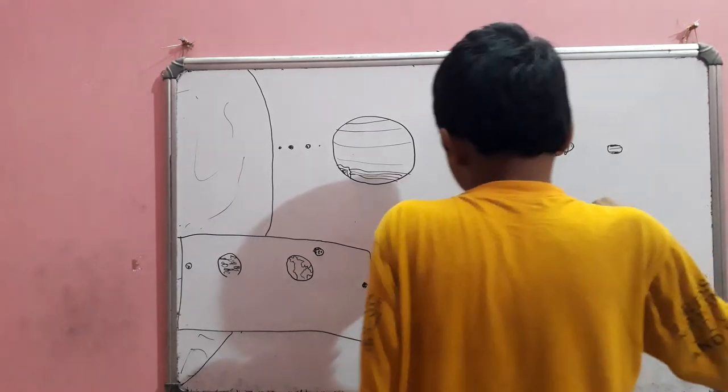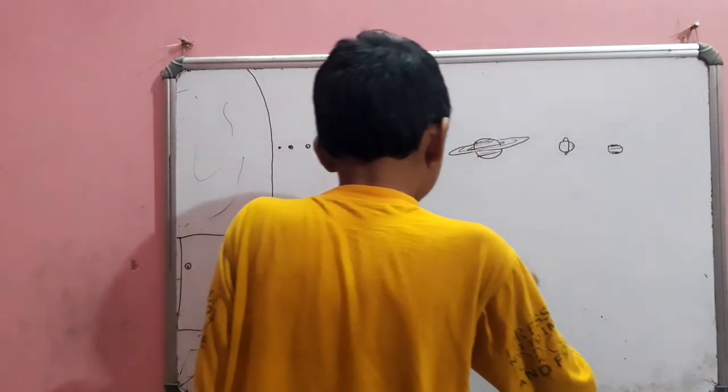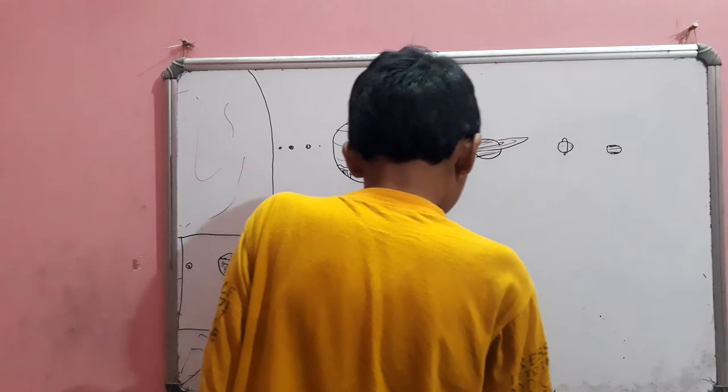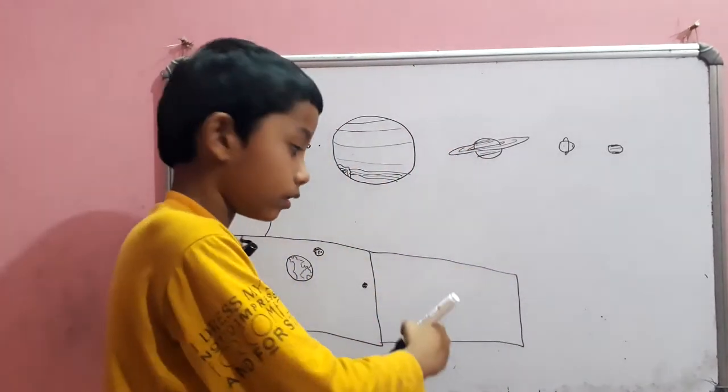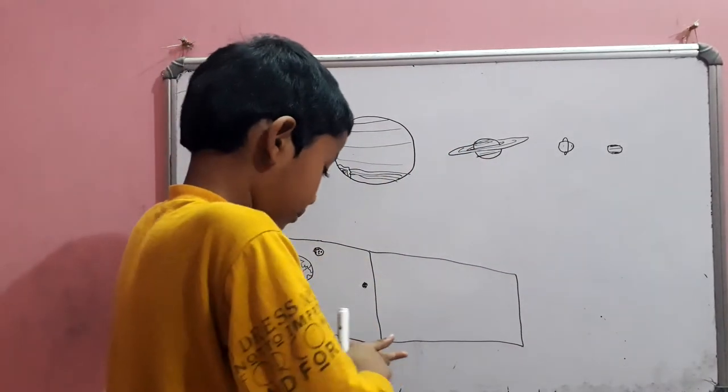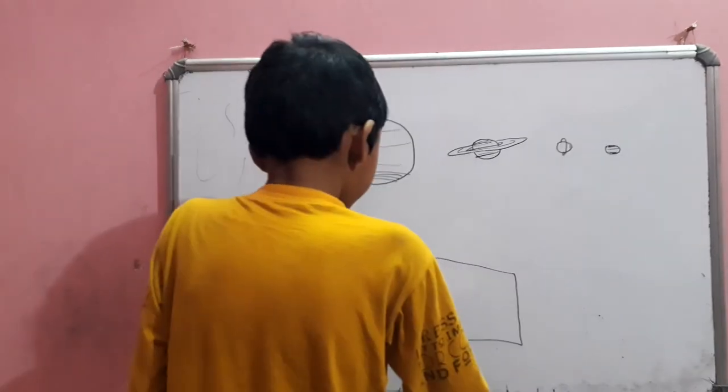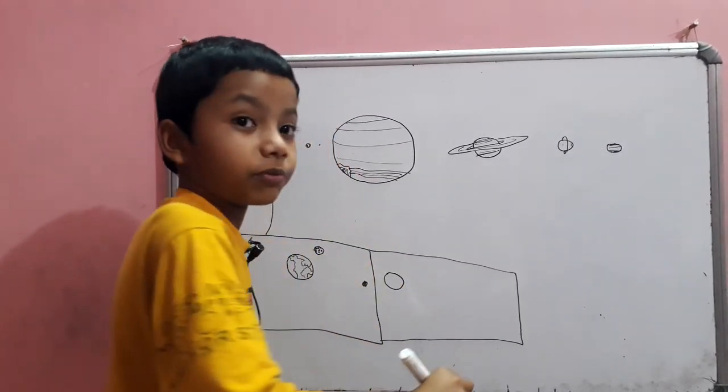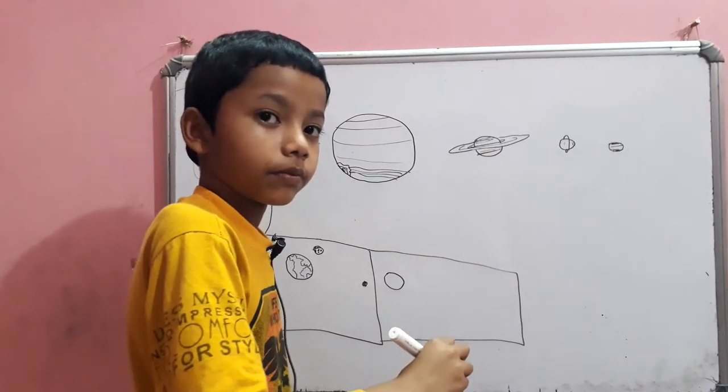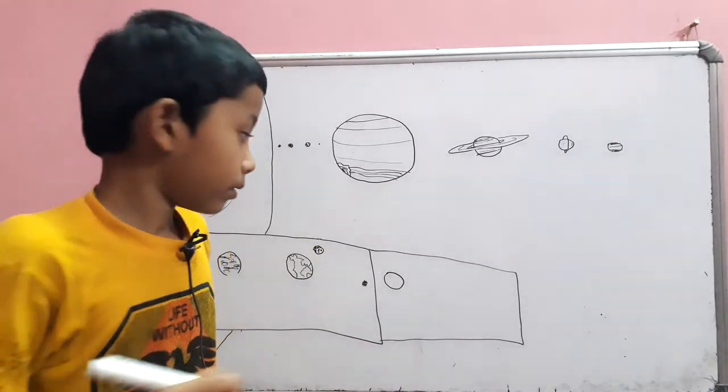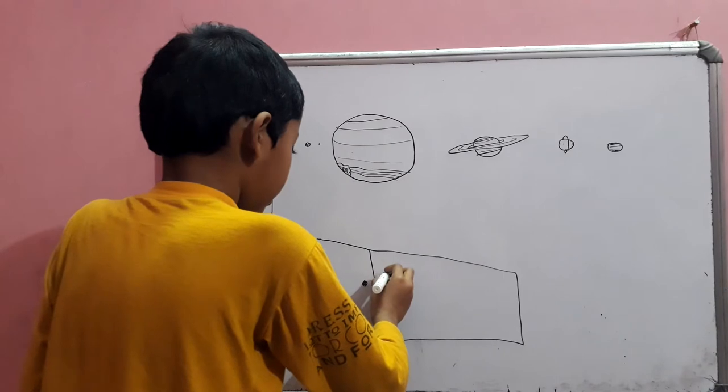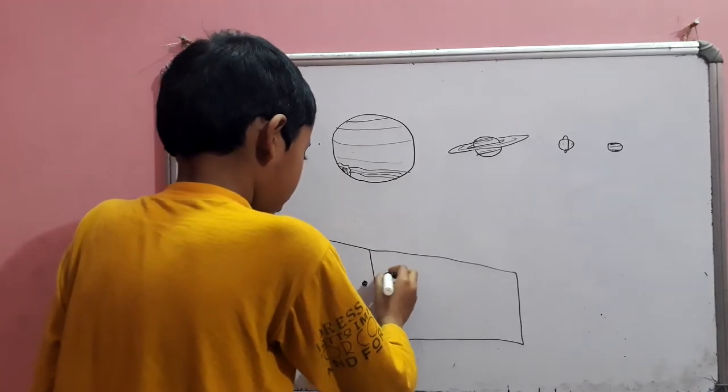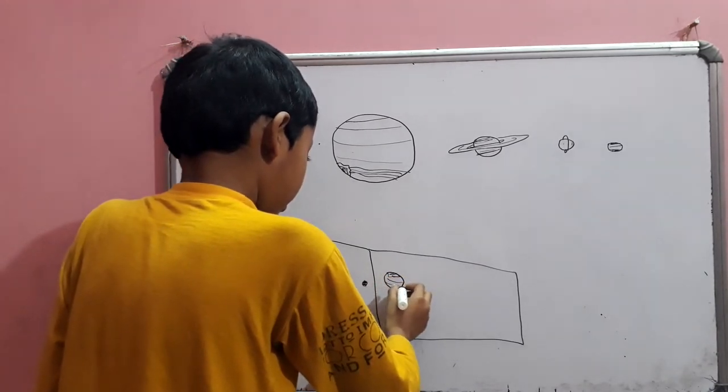Now, these are the dwarf planets. Here, I'm going to draw the dwarf planets. So, this is Pluto, the largest dwarf planet in the solar system. How does Pluto look like?